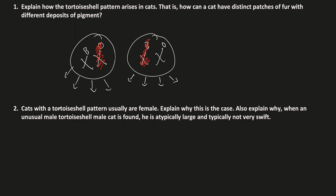Cats with a tortoiseshell pattern are usually female, exactly as described. When you have two X chromosomes, one chromosome is randomly inactivated. This is because you don't want too much activation of X-linked genes — you'd have too much expression — so dosage compensation is needed.